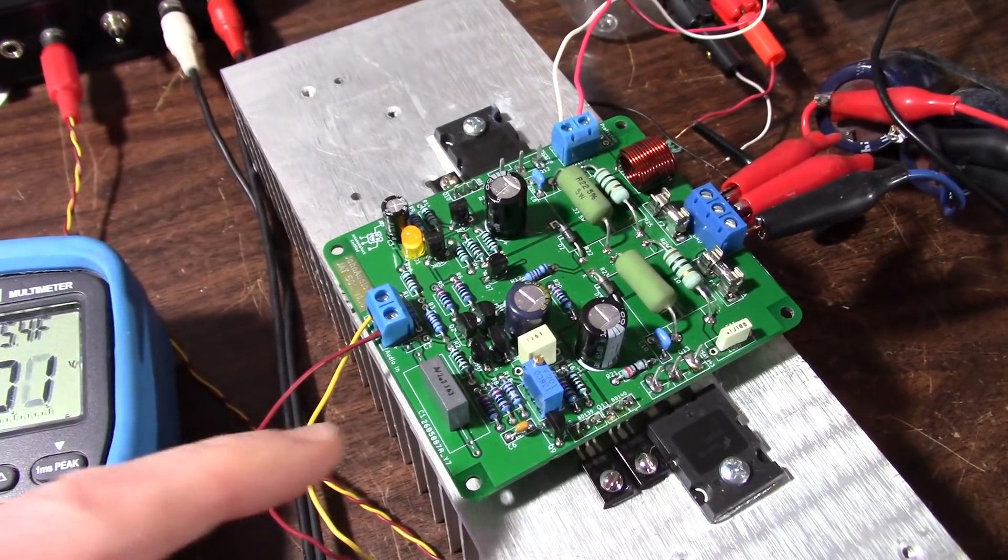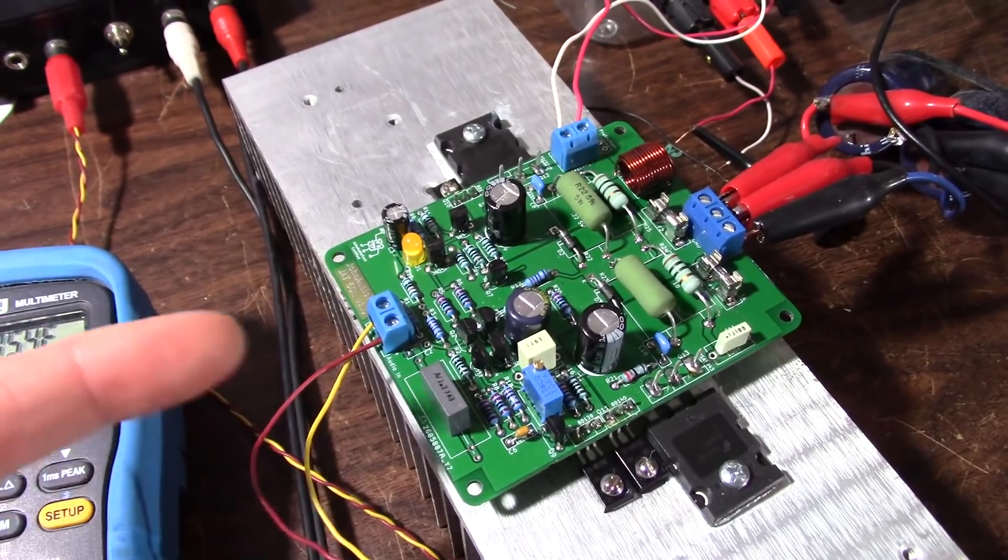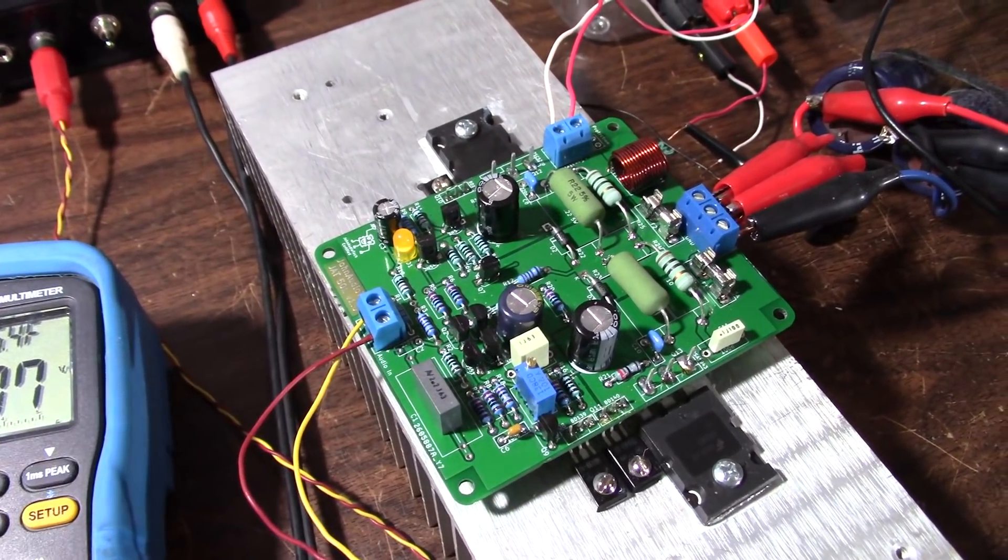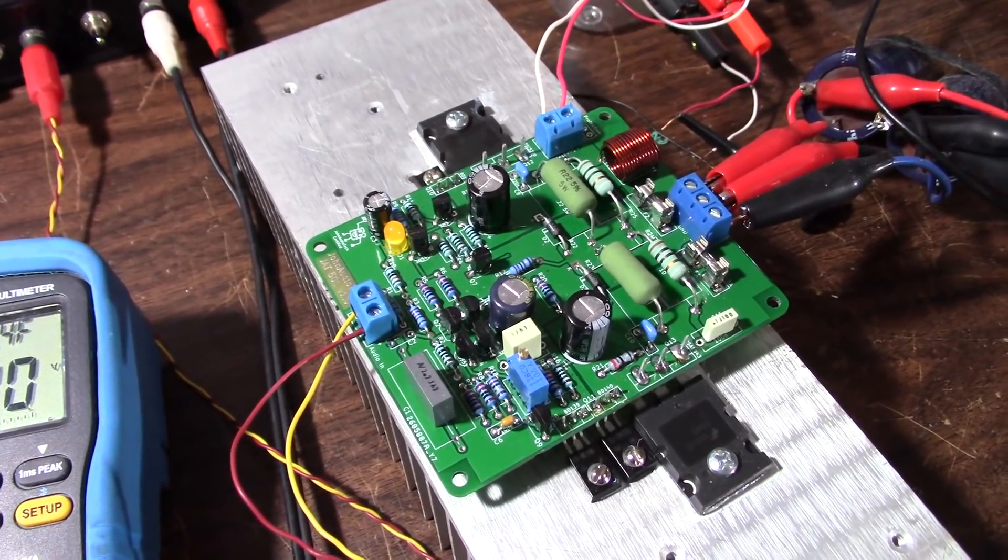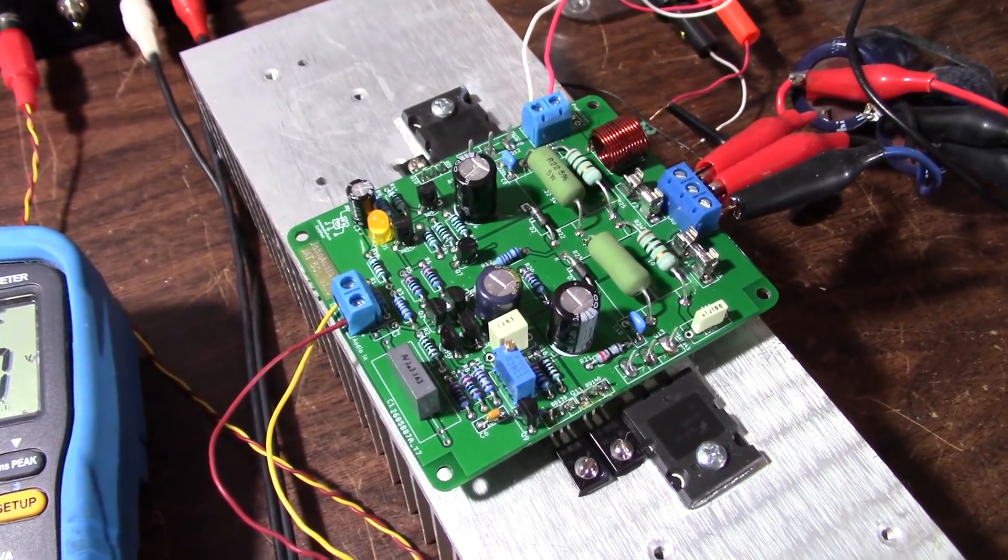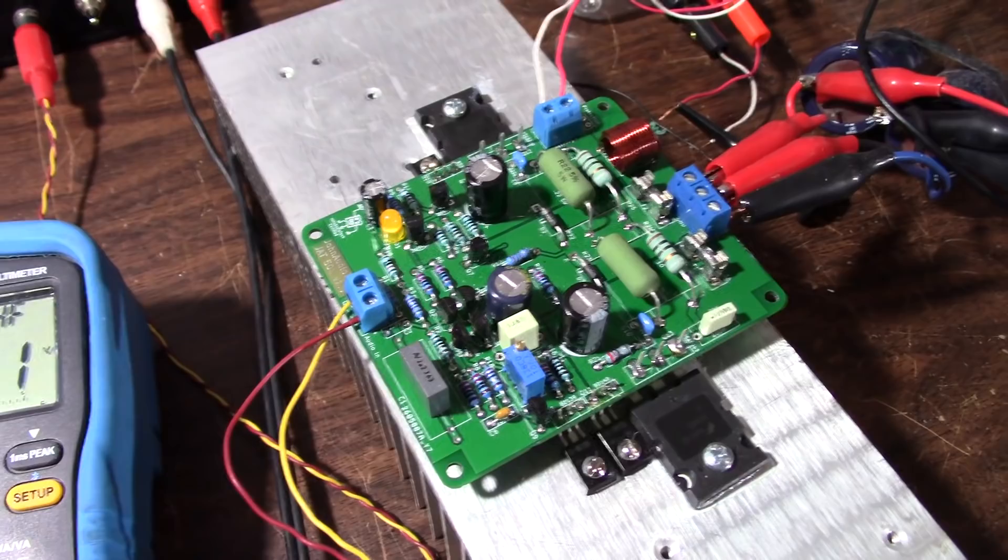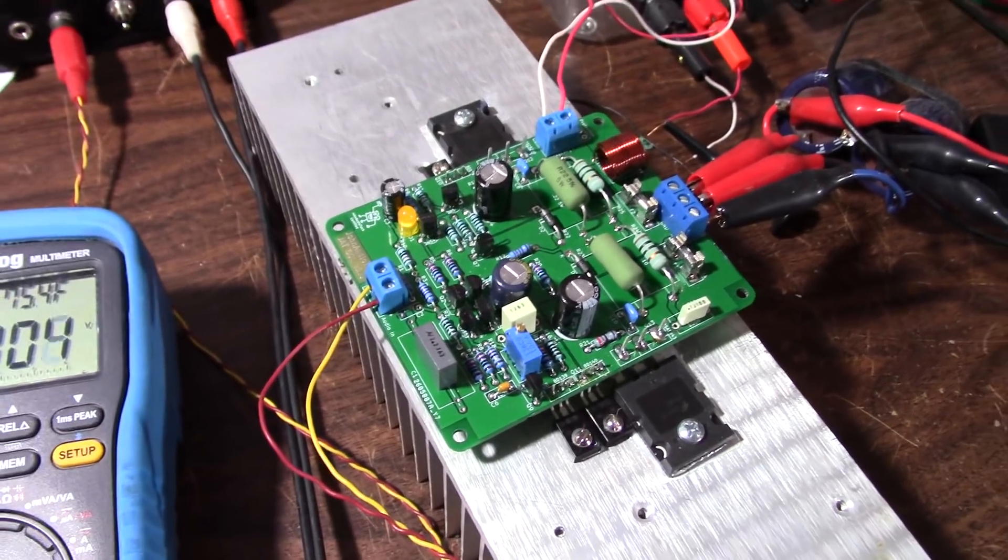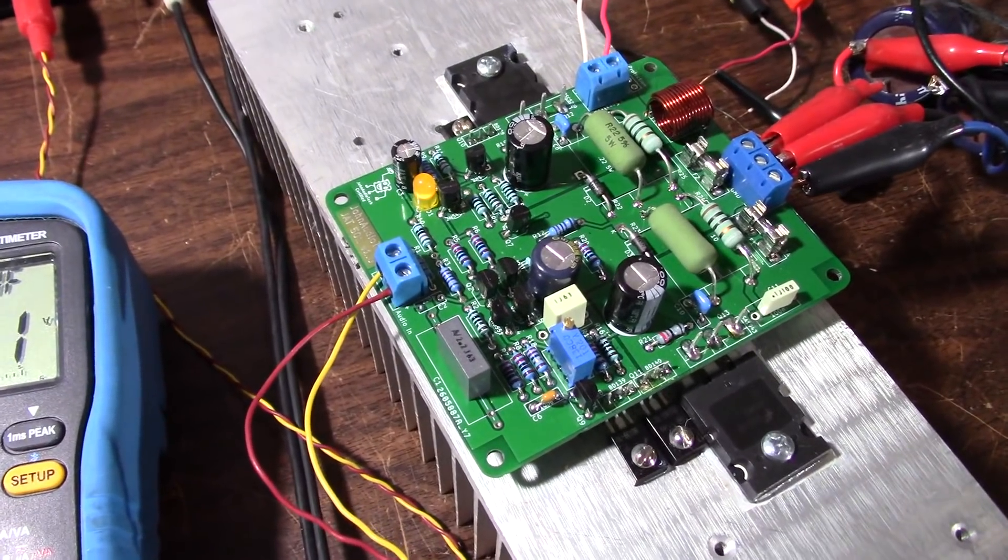After you have done those preliminary tests, then you can turn the bias down and connect it to a higher voltage. I'd still recommend some sort of current limit. And then you want to set the bias up. So let me get the camera here on a tripod and show you what's going on.